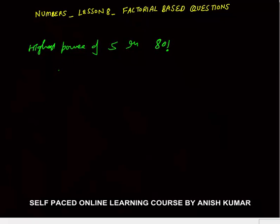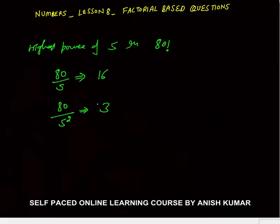Next example: highest power of 5 in 80 factorial. Multiples of 5: 80 divided by 5 equals 16, so 16 fives. More 5's in multiples of 25 (5 squared): 80 divided by 25, quotient is 3. No multiples of 125 (5 cubed) in 80 factorial. So the answer is 16 plus 3 equals 19. Remember this concept.